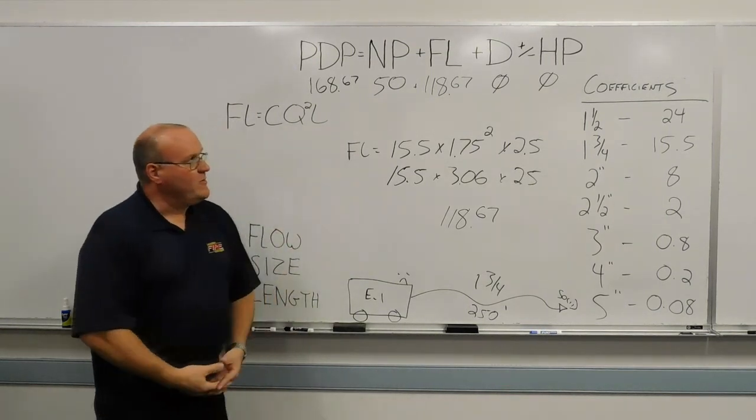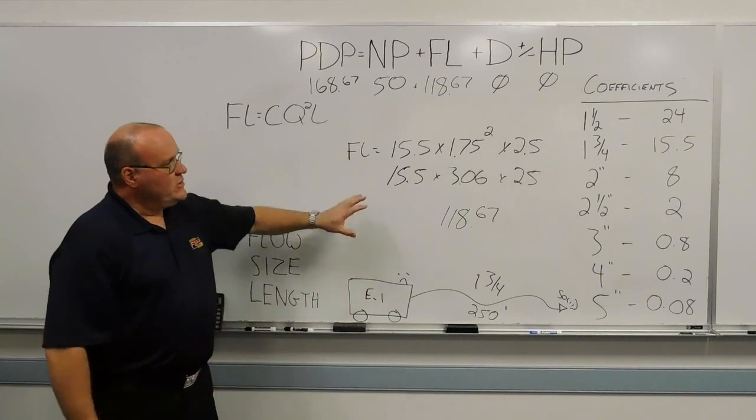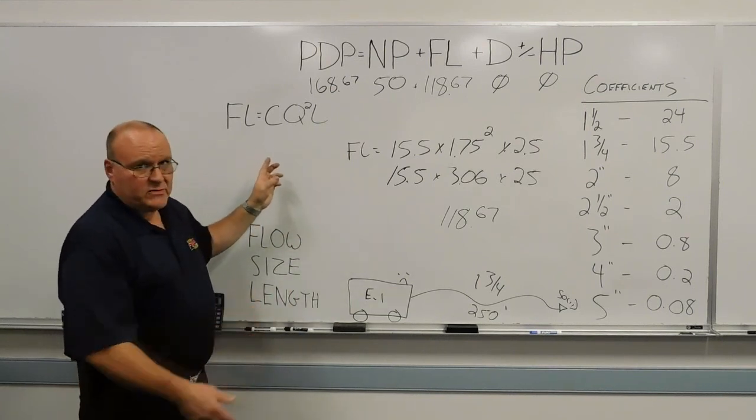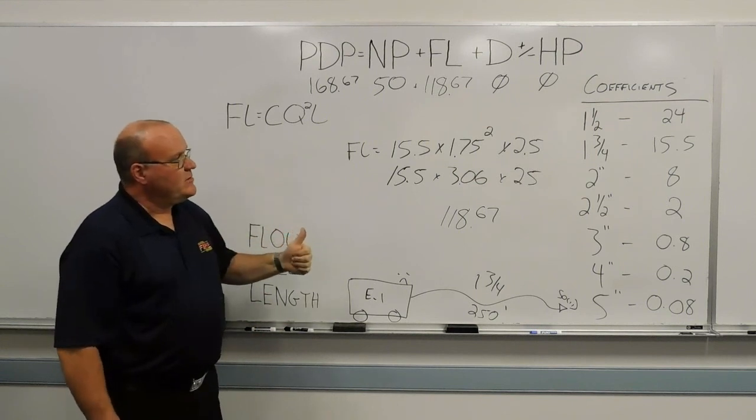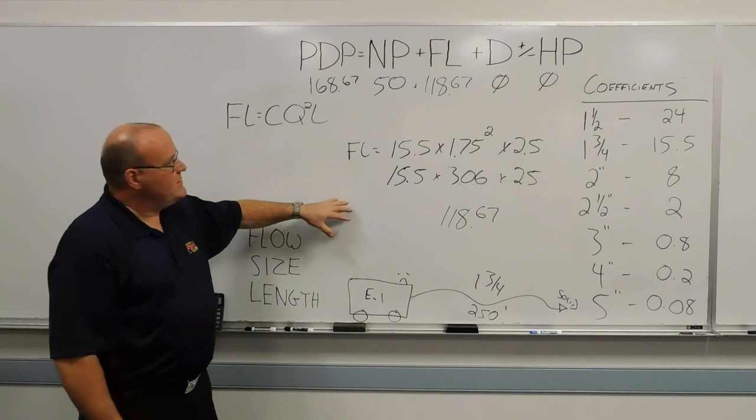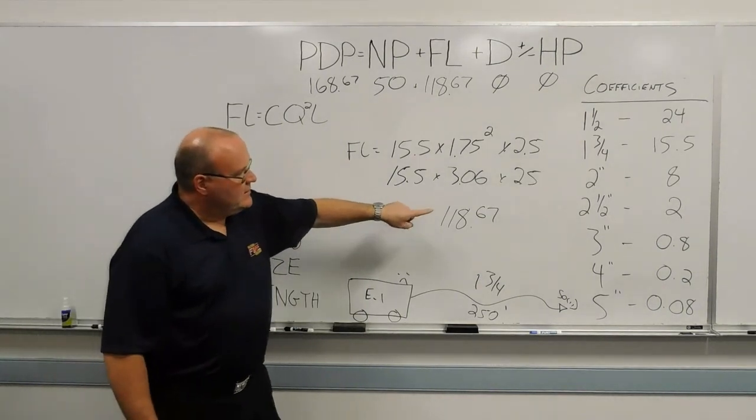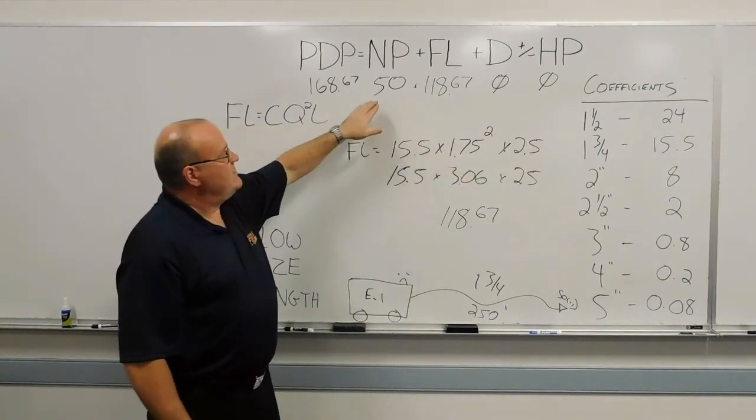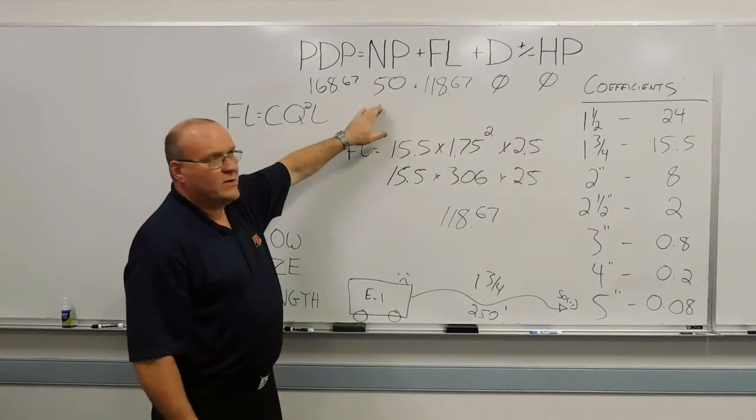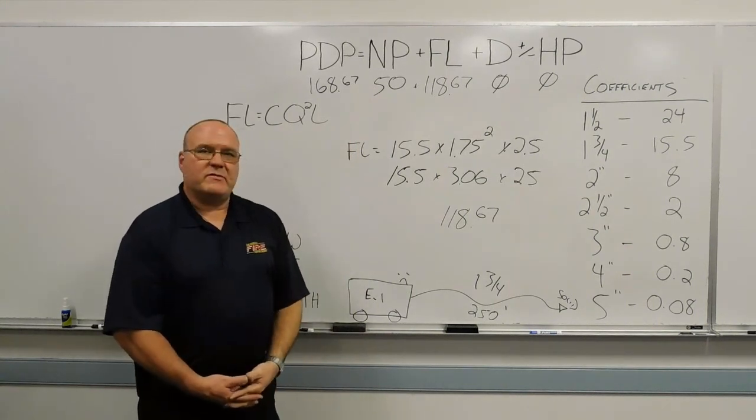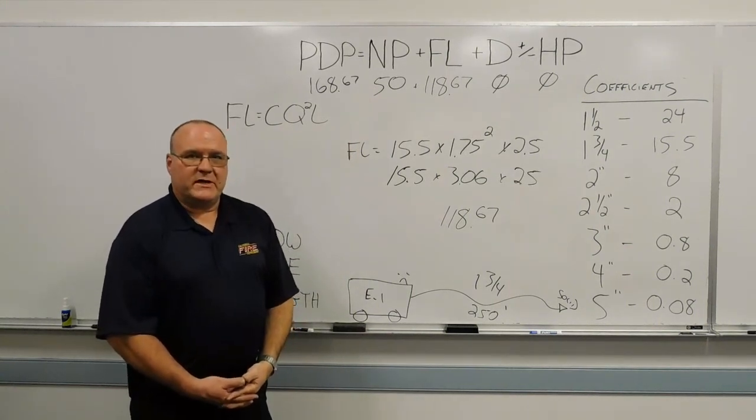So that's today's training minute. If you use the coefficient method, that's a quick two examples of that using inch and three-quarter hose and using two-and-a-half-inch hose. The only thing that would change if you use that would be the hose size, a different coefficient, and then whether or not you were adding a nozzle pressure or a residual pressure, which number that would be. So that's today's training minute, coefficient method for determining friction loss. Thank you.